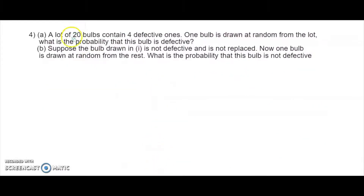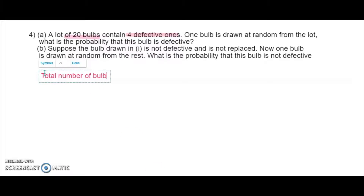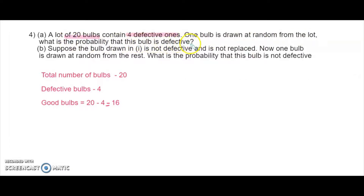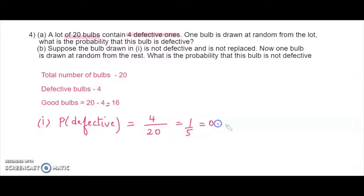In the next question, there are a lot of 20 bulbs — total is 20 bulbs and 4 are defective, so good bulbs will be 20 minus 4, which is 16. Now, one bulb is drawn at random from the lot. What is the probability that this bulb is defective? Defective bulbs are 4, total is 20, so the probability is 4 over 20, which is 1 over 5, or 0.2.